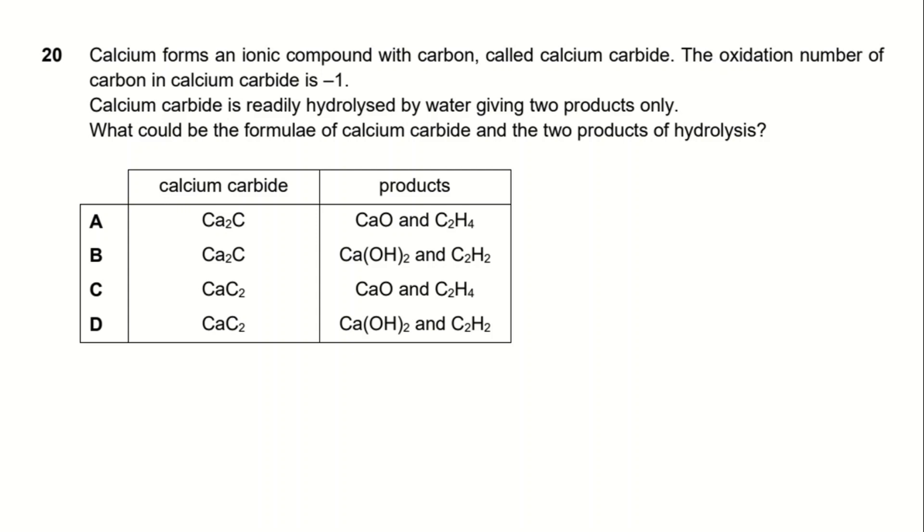We are going to find the formula of calcium carbide and the two products of hydrolysis of calcium carbide in this question. The question tells us that the oxidation number of carbon in calcium carbide is negative 1.